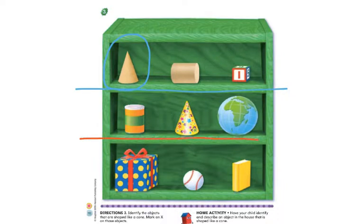The middle row. Looks like we have a can, a party hat, and a globe. Which one of those is a cone? Point to it. Five, four, three, two, and one. Here it is. The birthday hat is our cone shape.